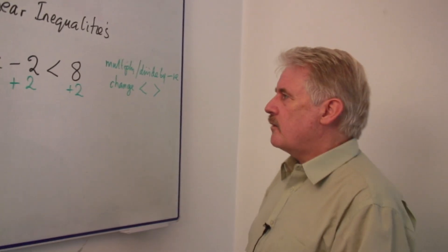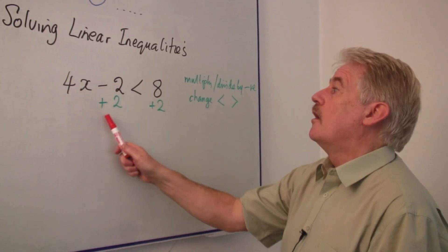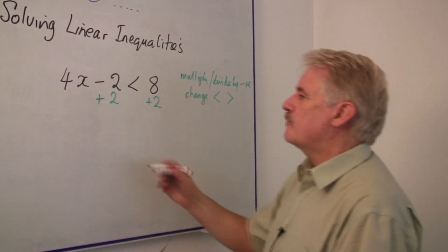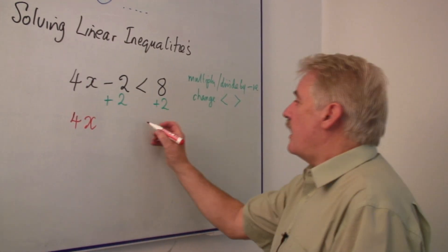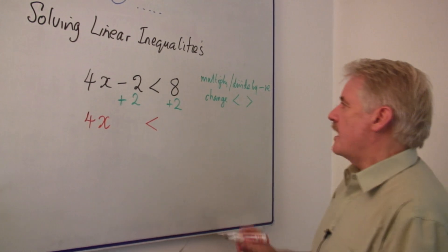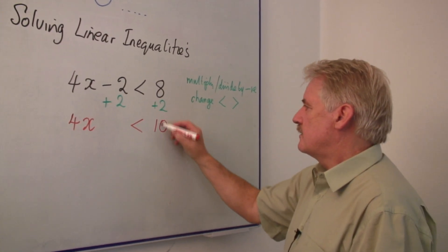So what I'm now going to do is evaluate this. 4x minus 2 plus 2 will leave me with just 4x here. I'll still have my less than, and I've got 8 plus 2. That's 10.